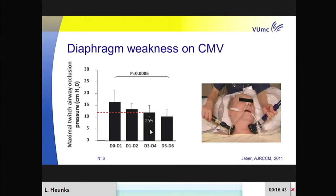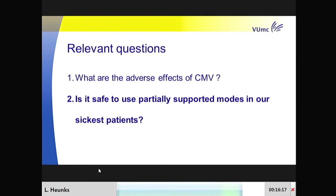A study from Chabay in France looked at the pressure-generating capacity of the diaphragm in ICU patients. After only three to four days of mainly controlled mechanical ventilation, the pressure-generating capacity of the diaphragm was reduced by 25%. It's a small study, but I still think it's important data. So yes, there are adverse events of controlled mechanical ventilation—of not using the respiratory muscles.